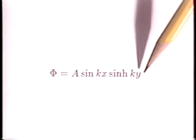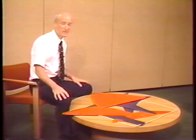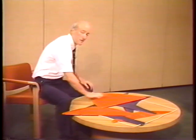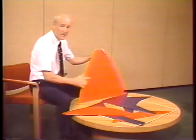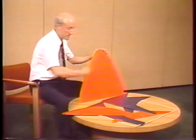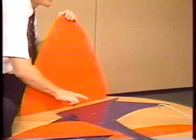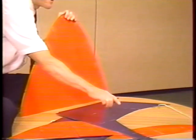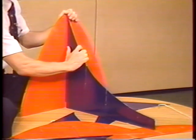The potential can be viewed as the vertical dimension on this floor. This is the potential. The x direction, the direction of periodicity, is that direction. And here's our sine function. This is the y direction. And here's our hyperbolic sine function.